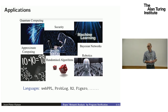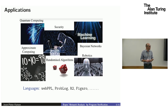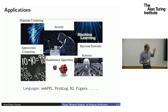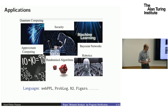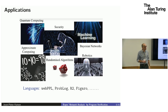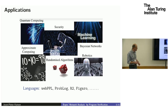There are many applications. This is more from the formal verification point of view. People use program verification on probabilistic things, quantum and security — in particular differential privacy — and also approximate computing. The group of Martin Rinard at MIT does a lot on probabilistic programs.